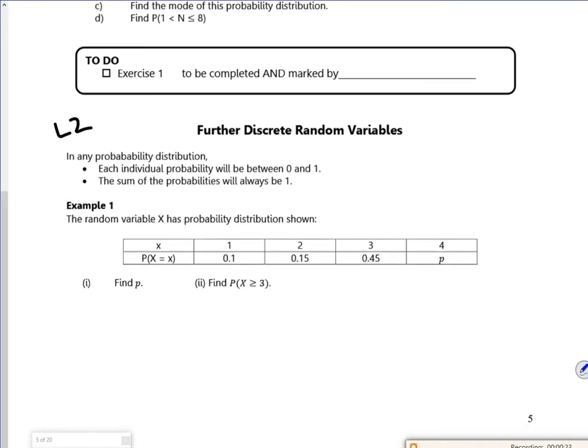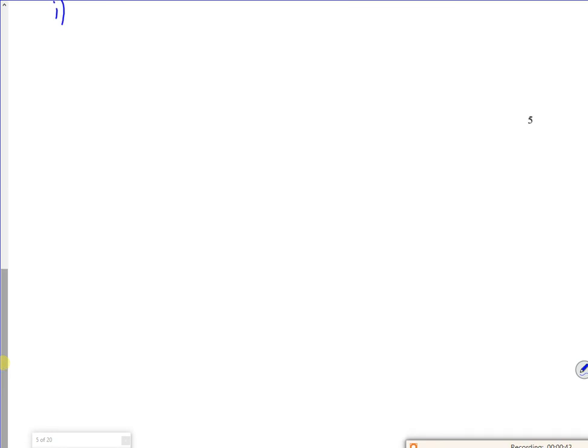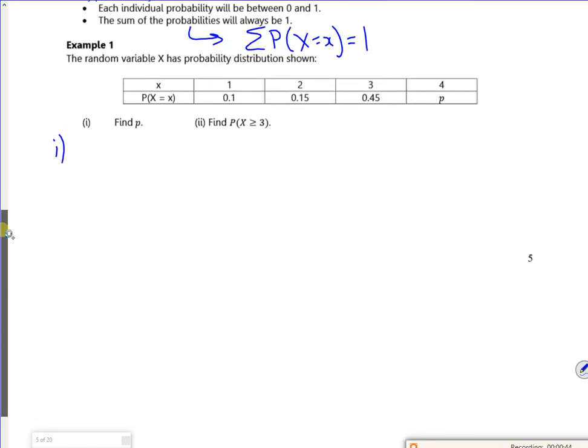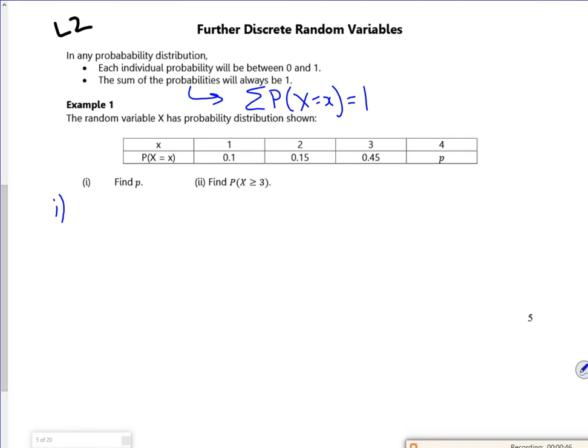So as a reminder, individual probabilities are between 0 and 1, and the sum is always 1. So the sum of the probability that x is equal to x is equal to 1. And I'm going to use this fact to find out part one.